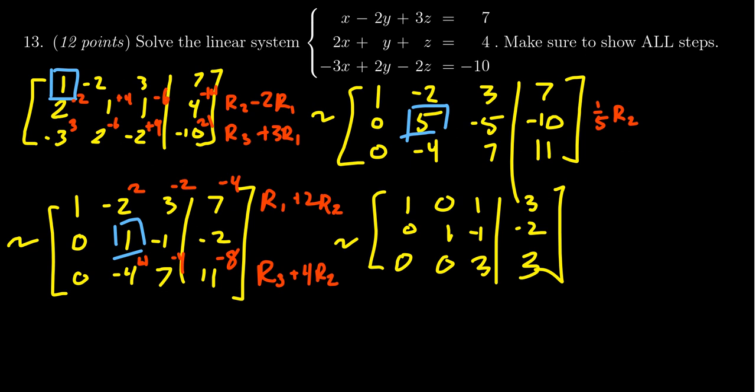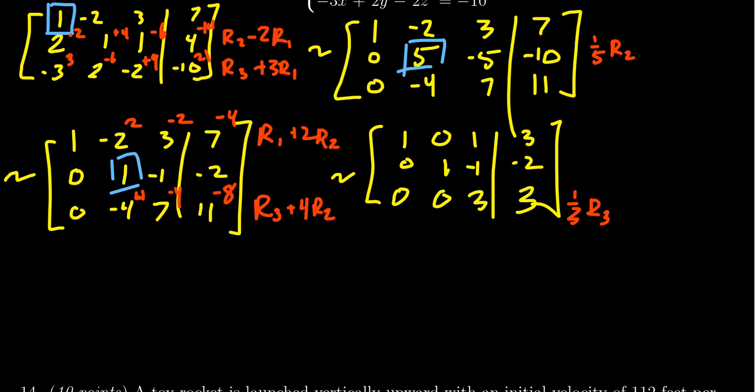That worked out pretty nicely for us. I'm going to divide row 3 by 3 itself. Our pivot moves now to the 3-3 position. After dividing by 3 we get 1, 0, 1 and 3; 0, 1, -1 and -2; and then lastly 0, 0, 1, 1.